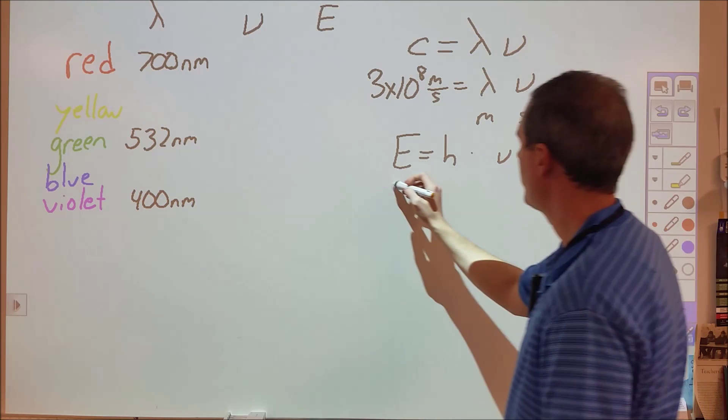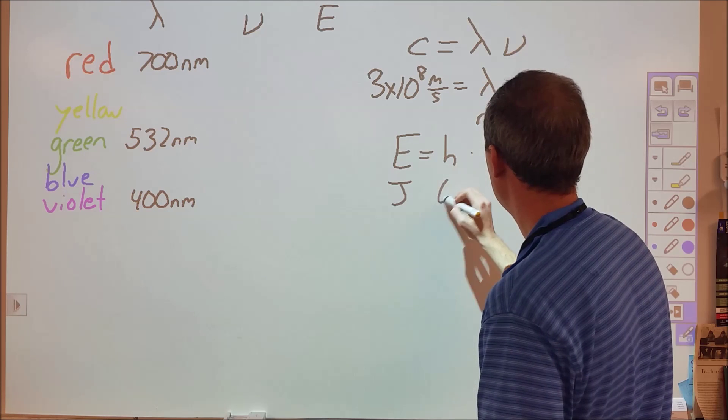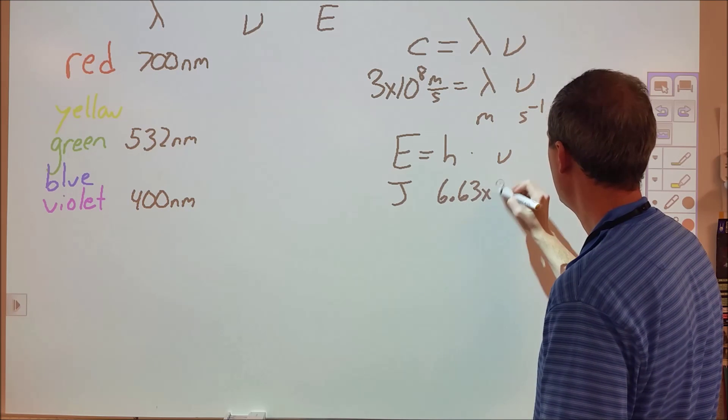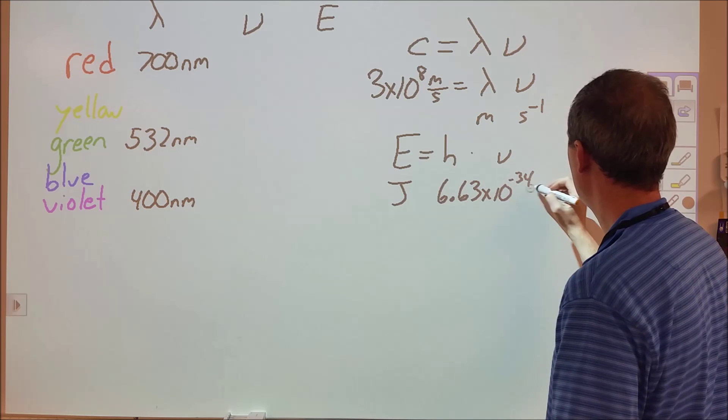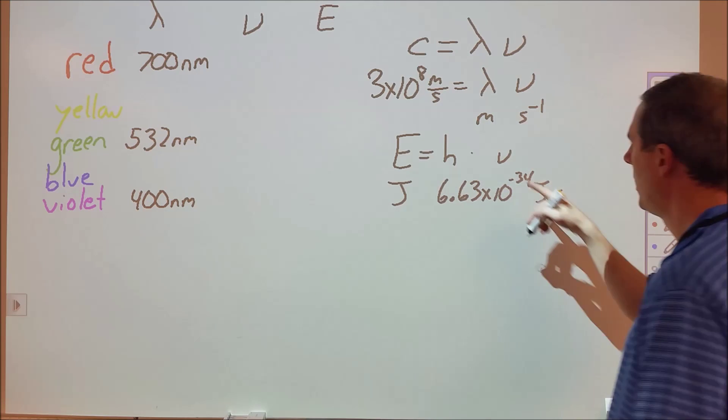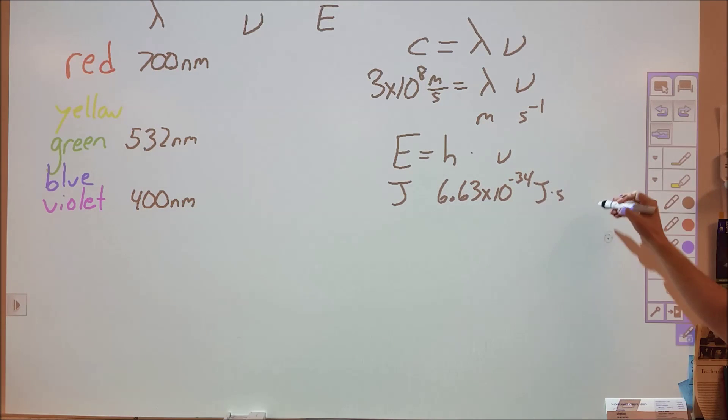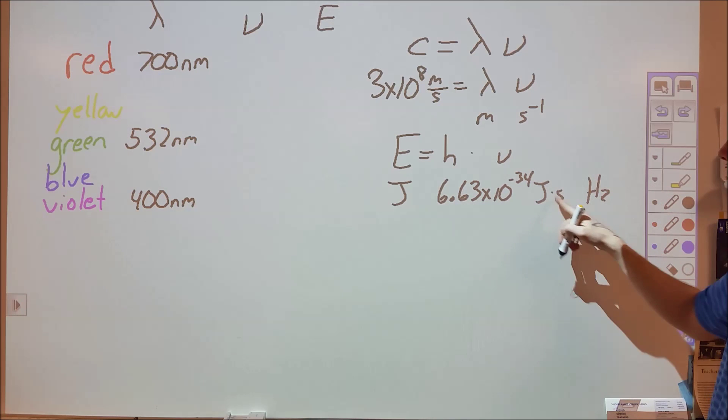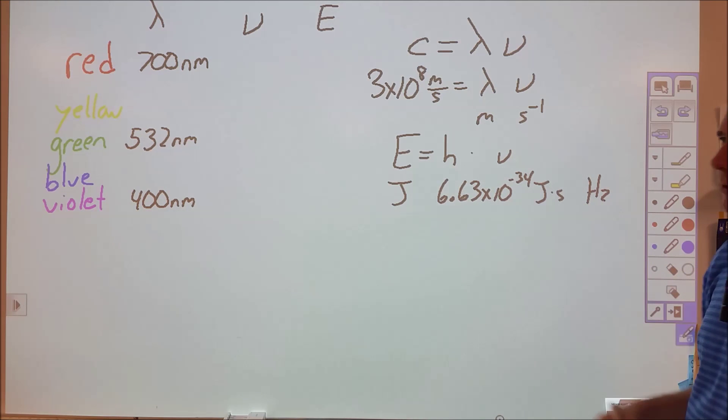Energy is equal to Planck's constant times frequency. Energy is measured in joules. Planck's constant is 6.626, or 6.63 times 10 to the negative 34th joules times seconds. And the frequency being seconds to the minus one, or hertz, will cancel out the seconds there to give us joules.